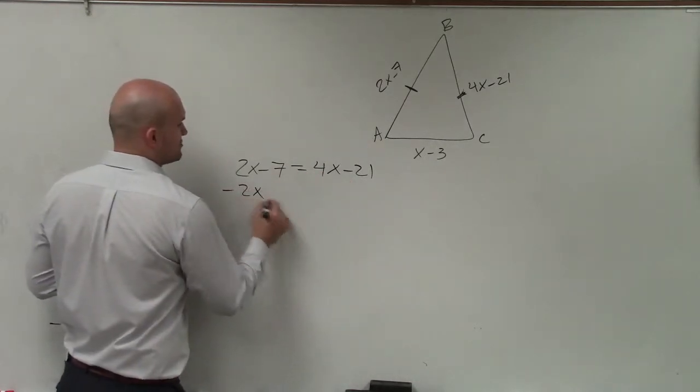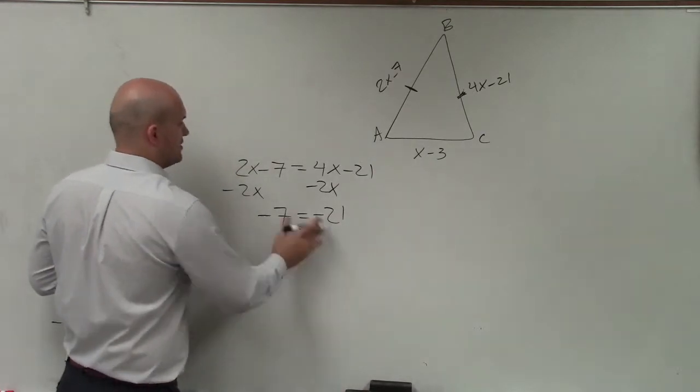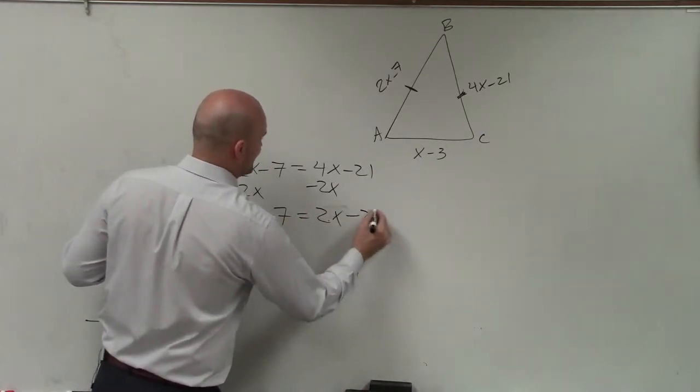Now, I can solve for x. So I subtract 2x on both sides, and I get negative 7 equals... I'm sorry, 2x minus 21.